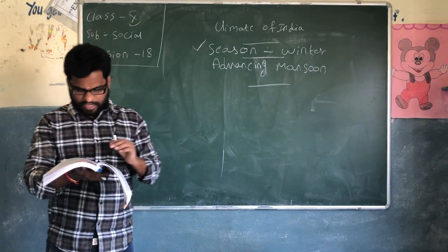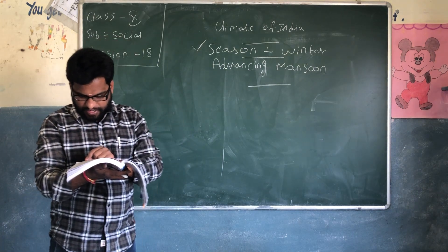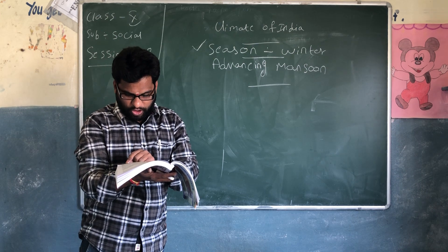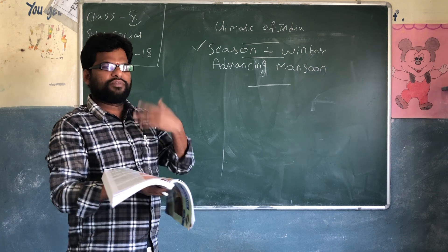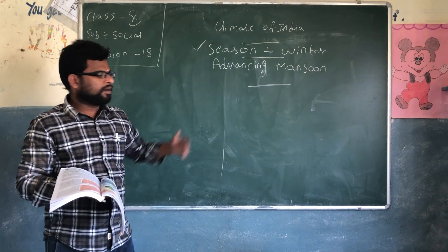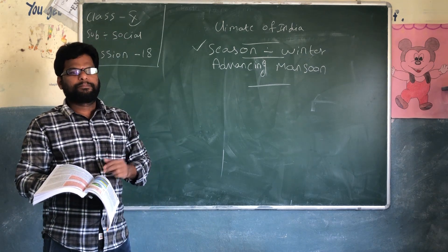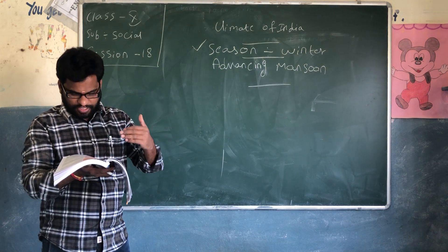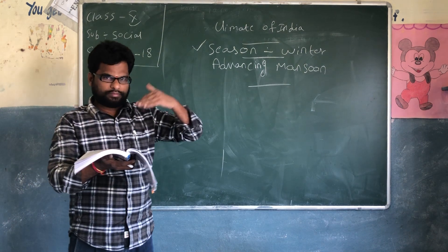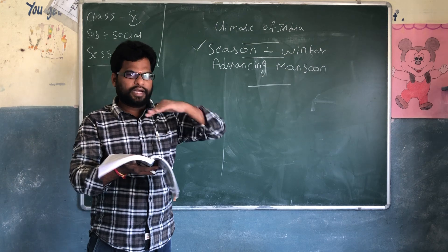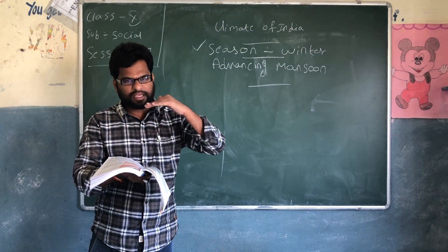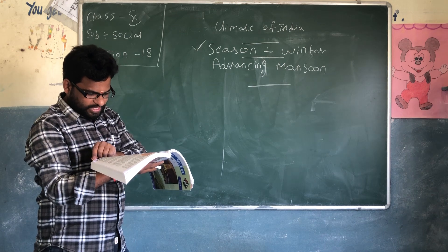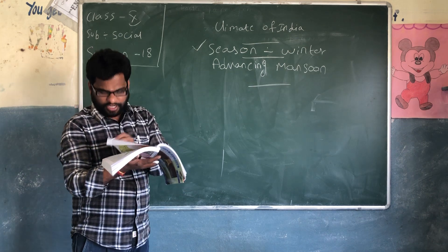The winter season runs from mid-November to February. January is usually the coldest month, and the temperature sometimes drops below 10 degrees Celsius in several parts of the country. However, the cold weather is more pronounced in northern India.